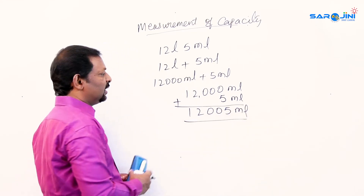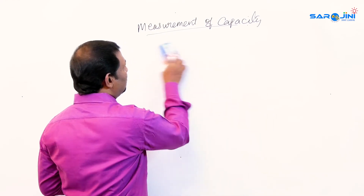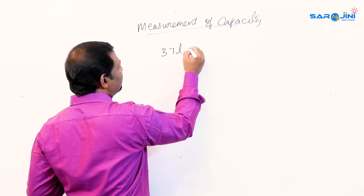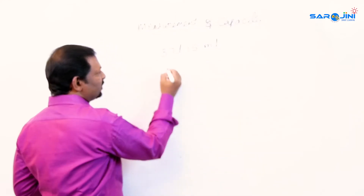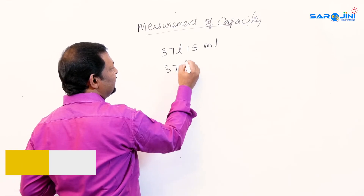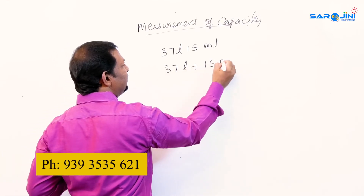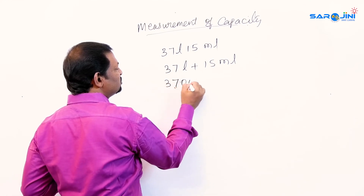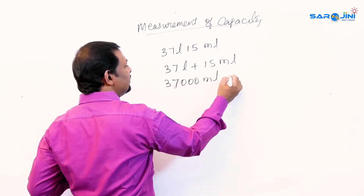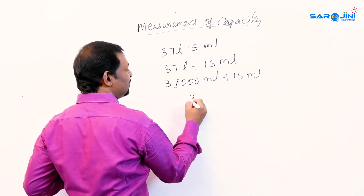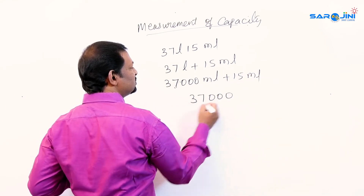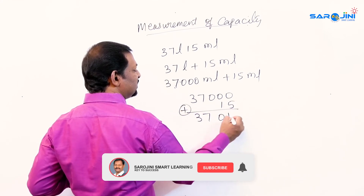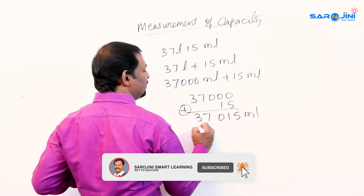Another example: 37,000 liters 15 milliliters. So 37,000 ml plus 15 ml on addition gives 37,000 plus 15 ml, that is 37,015 ml.